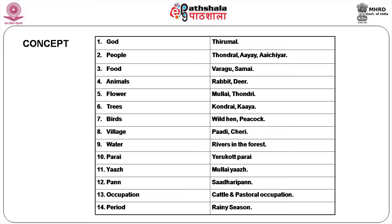We have 14 different concept items. God is Thirumal. People: Thondral, Ayara, Achayar. Food: Varagu, Samai. Animals: rabbit and deer. Flowers: Mullai, Thondri. Trees: Kondraimaram and Kaya. Birds: hen and peacock. Village is called Padi or Cheri. Water: in the forest area you have rivers. The music instrument is Yarkottu Parai. The musical genre is Mullai Yazh. The pan is Sadaripan. The basic occupation is cattle and pastoral, using the forest for social forestry. Their period is the rainy season.